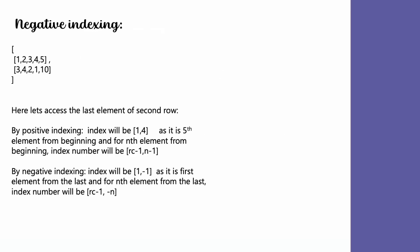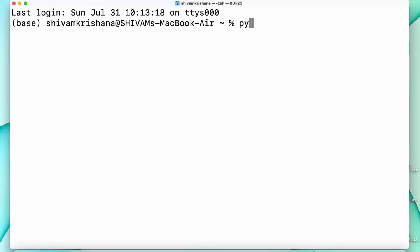Now let's do negative indexing for this array. By positive indexing, the index of the last element of the second row will be 1 comma 4, as it is the fifth element from the beginning. In general, for the nth element from the beginning, the index number will be row count minus 1 comma n minus 1. If we do negative indexing, the index will be 1 comma minus 1, as it is the first element from the last. In general, for the nth element from the last, the index number will be row count minus 1 comma minus n.